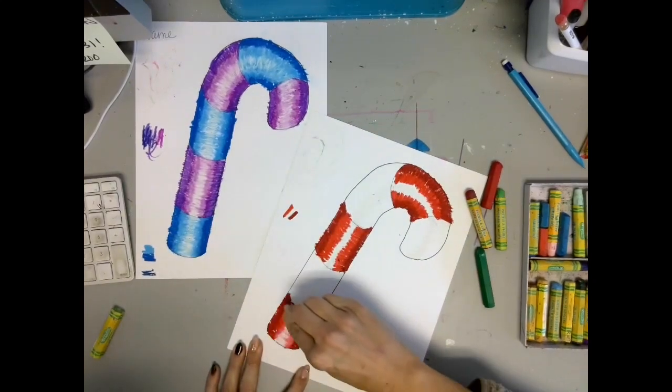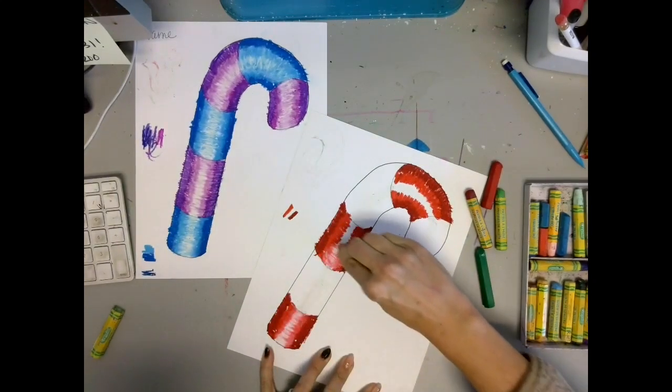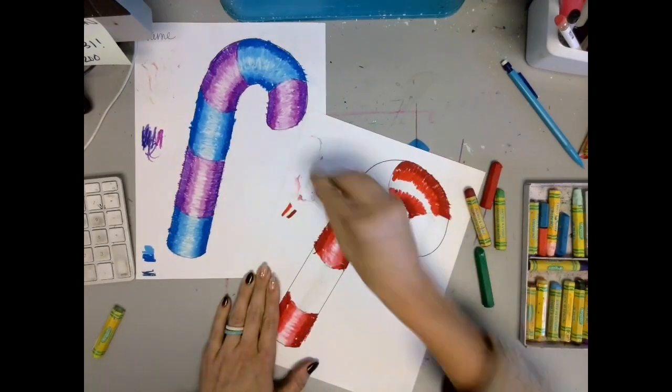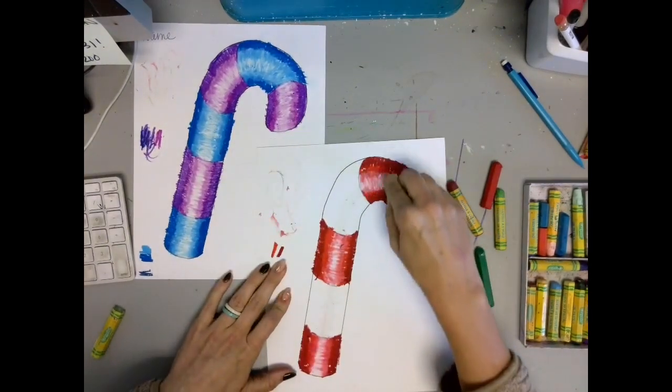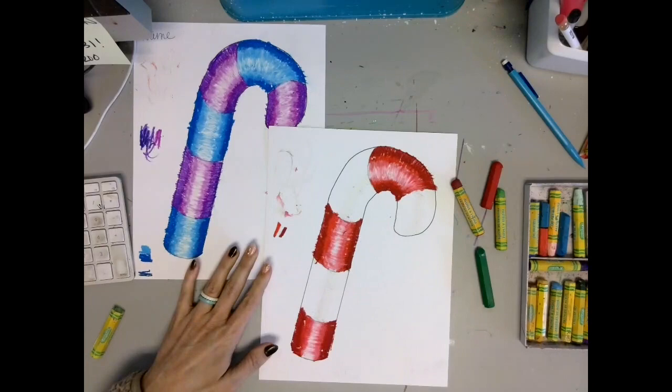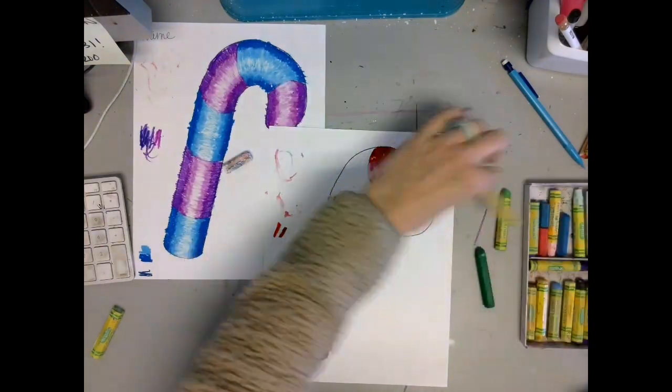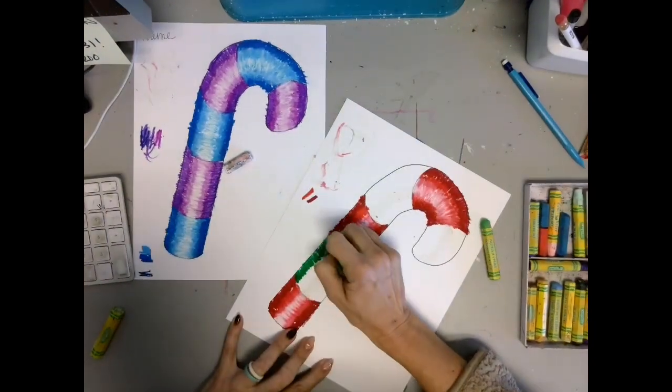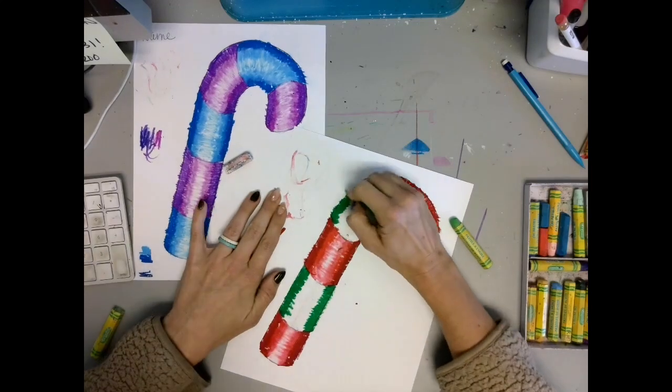This will blend the two tones together and create a 3D look. Next we filled up the remaining sections with the two other colors that we collected doing the same exact process.